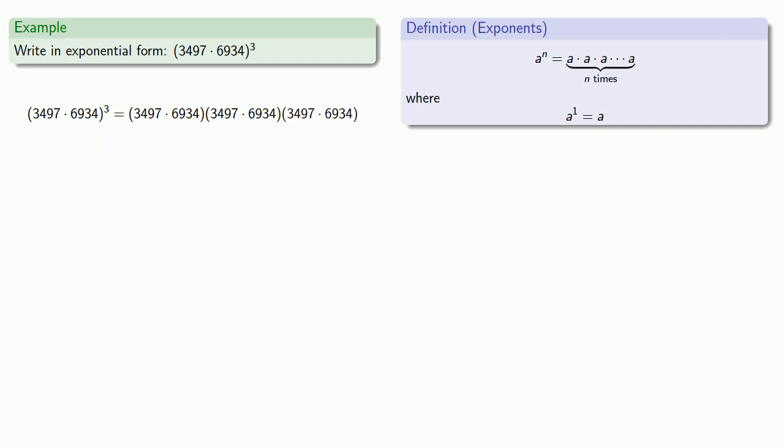And multiplication is commutative and associative, so I can rearrange things. And exponential notation keeps track of how many of which factor. So here I have 1, 2, 3 factors of 3497 and 1, 2, 3 factors of 6934.